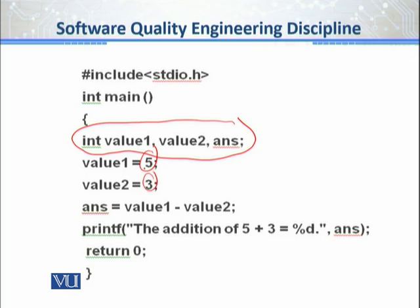I want to add two numbers. The third variable was ANS, or answer. Now the fault is an output of the error. It is an after effect. It is not a cause.